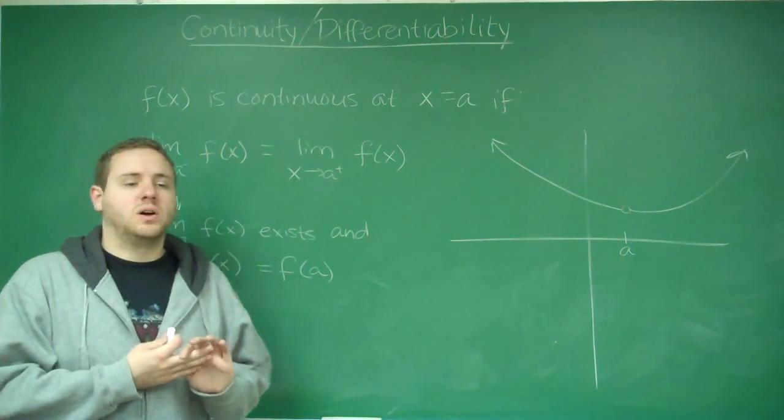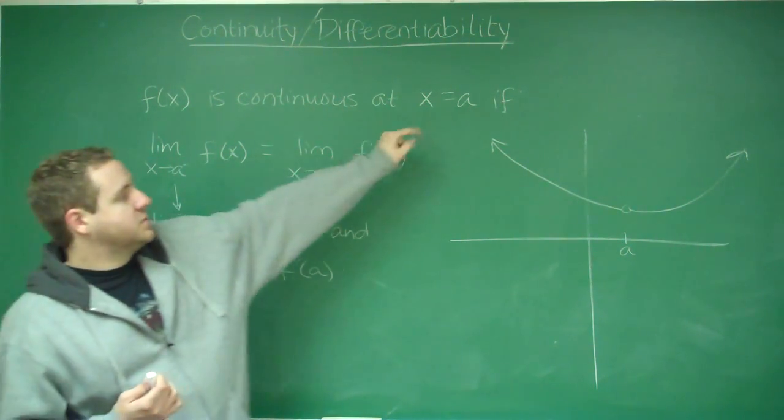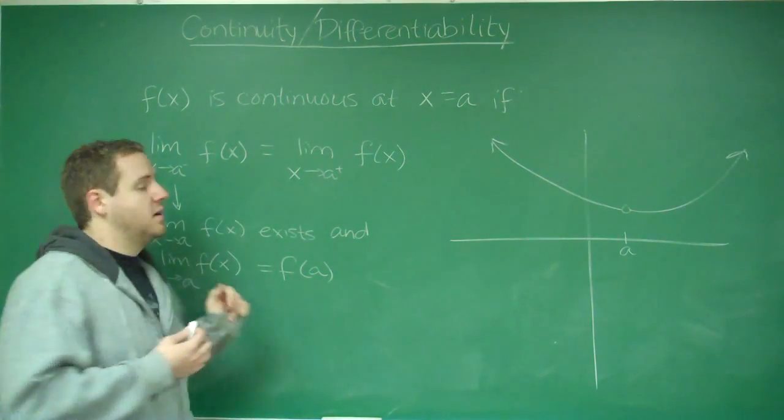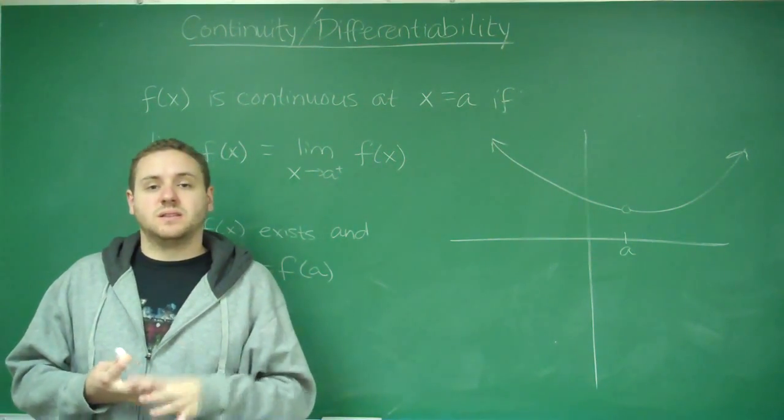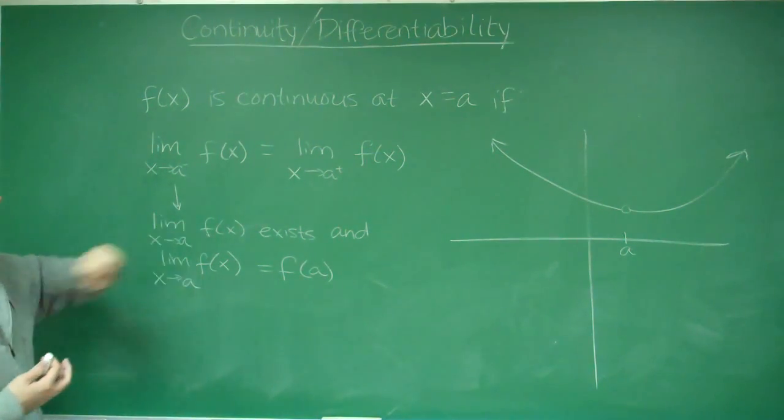So first let's recap what continuity means. f(x) is continuous at some point x equals a if the limit from the left and from the right of a of the functions are equal. So that just means that this limit needs to exist. So this condition implies that the limit exists.